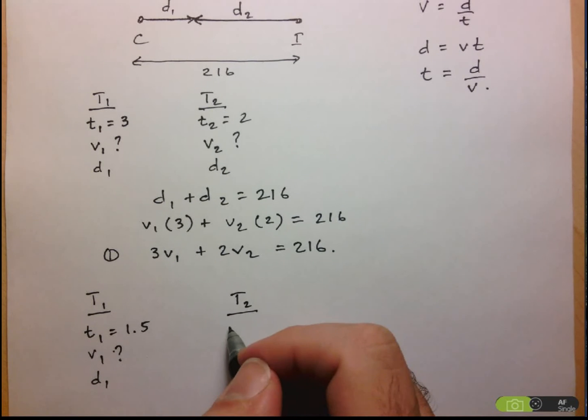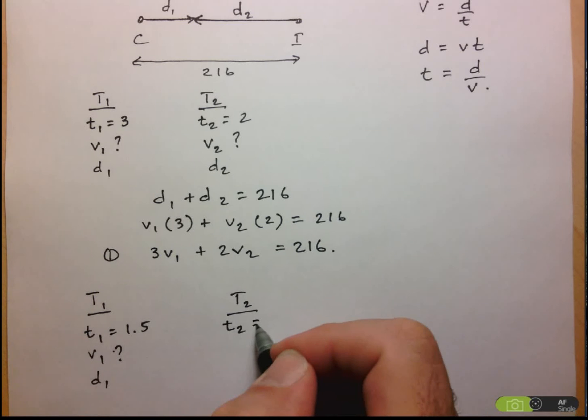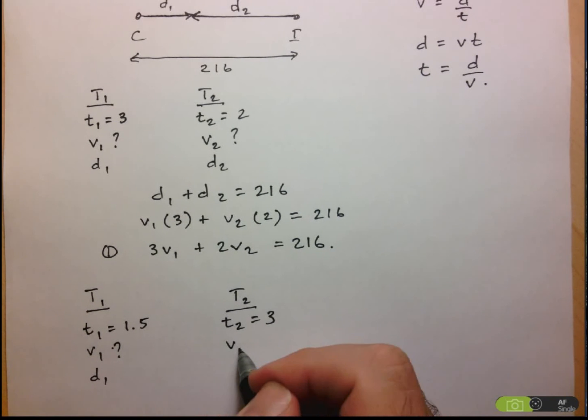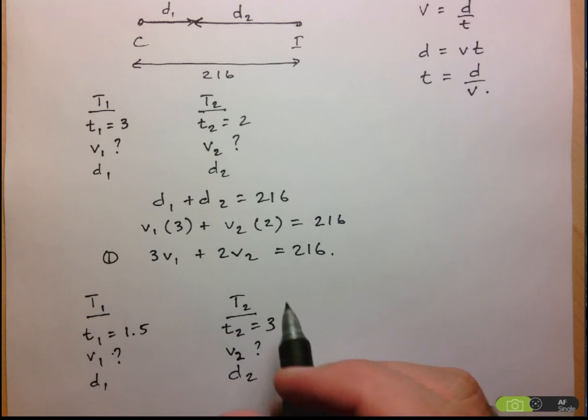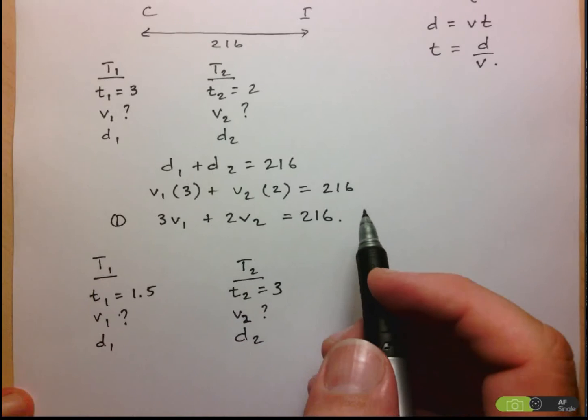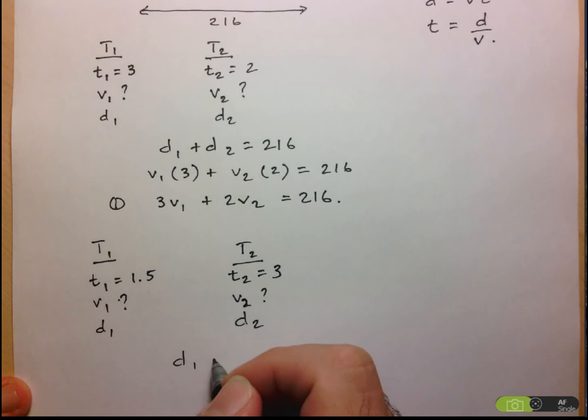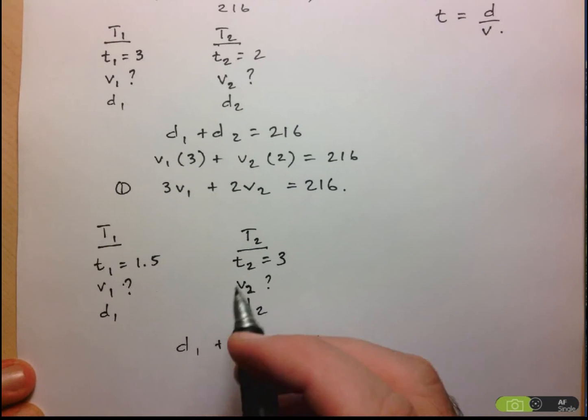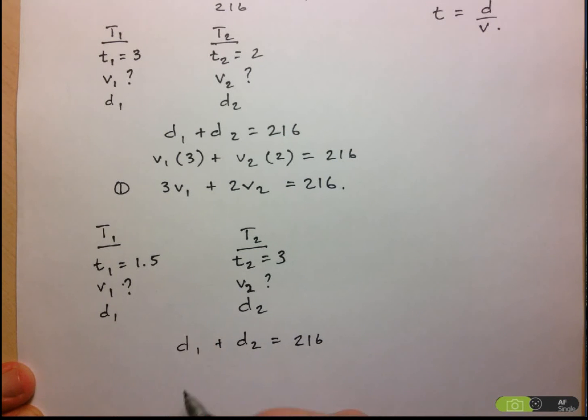We're told that train 2 is the one that leaves at 9, so it's traveling for 3 hours now. Similar to before, we know that the two distances have to add up to 216. So that's what we're going to use to create our second equation. D1 plus D2 is equal to 216. Similar to before, we have the distance is the time times the velocity, so 1.5V1. Then the distance of the second train will be 3 hours times its velocity, and again equal to 216. And here we have a second equation with the same two unknowns.